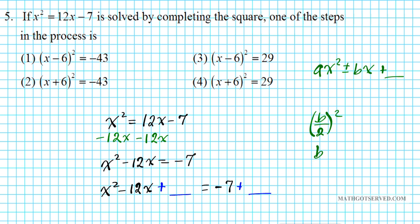In this problem, b is the coefficient of x, which is negative 12. So we divide it by 2, negative 6, and then we square that. Negative 6 squared is 36. So that's what we're going to add to both sides to complete the square. So we add 36. Add 36.